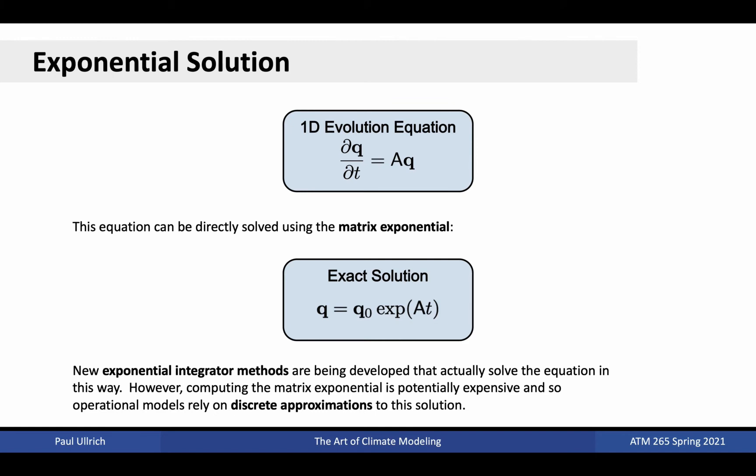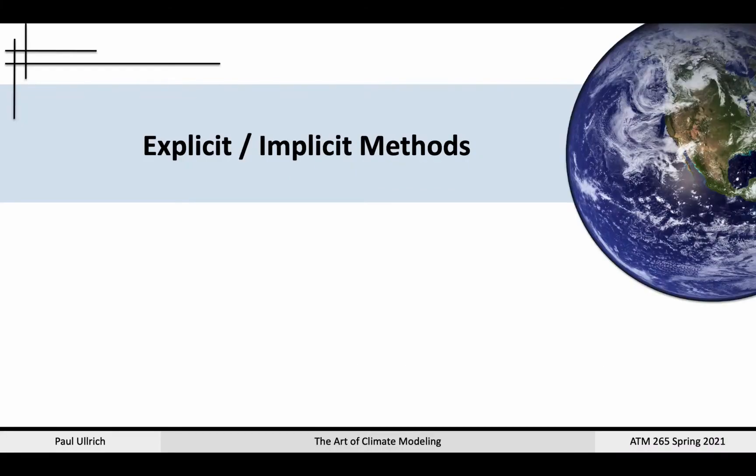With a known spatial discretization matrix, we can actually solve this equation directly. If A were a scalar instead of a matrix, you've likely already been exposed to the general solution of this kind of problem. If you've taken higher-level calculus classes, you're probably also aware that there is an analogous solution when A is a matrix using an operator known as the matrix exponential. Exponential integrator methods have been studied in recent years that essentially solve this problem in this manner. However, actually computing the matrix exponential is computationally demanding even for sparse matrices, and so operational models rely instead on discrete approximations to the matrix exponential.